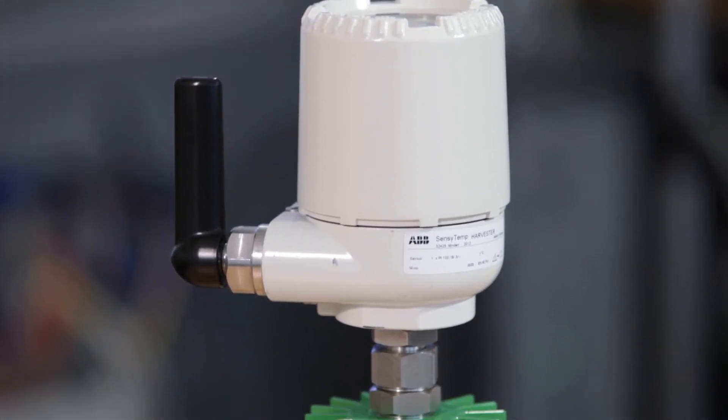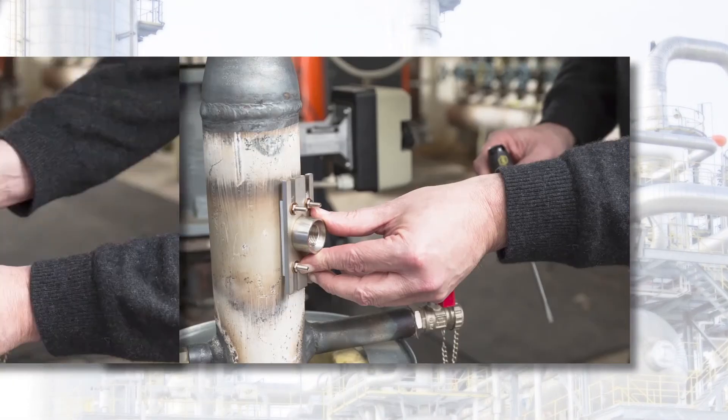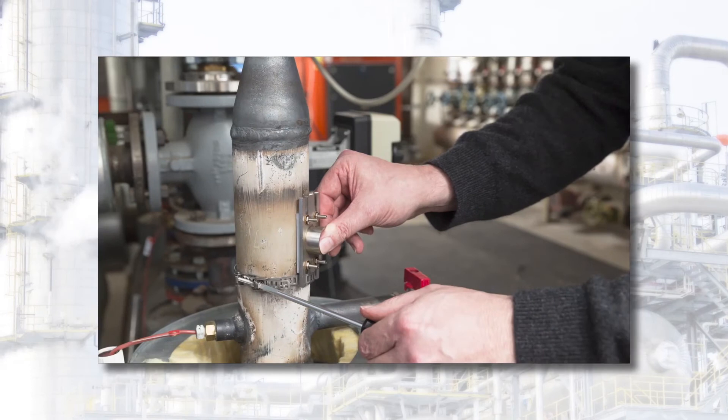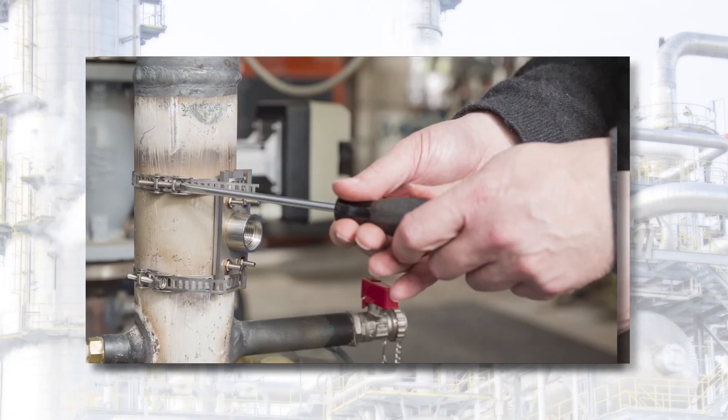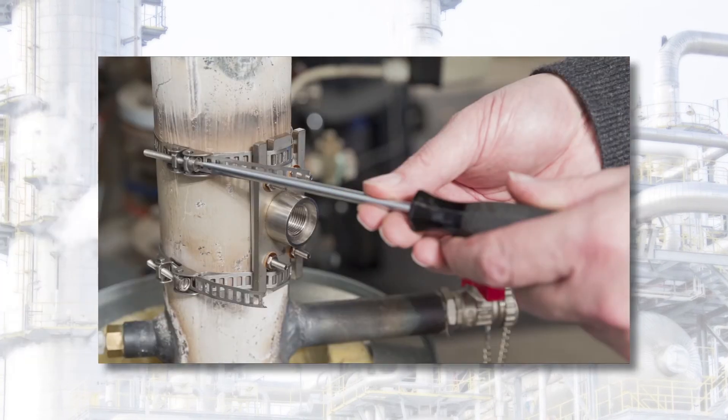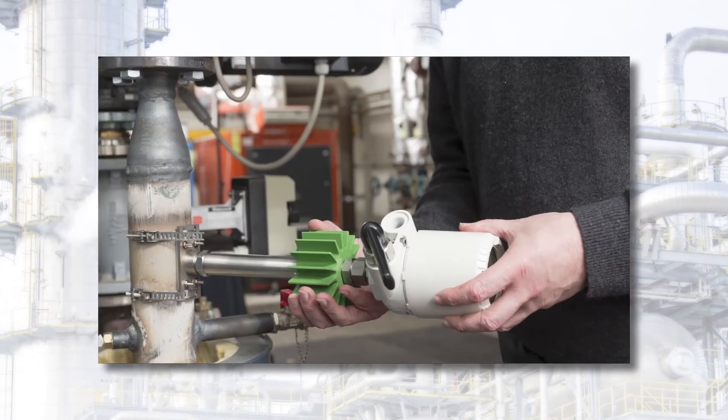The Energy Harvester installation at the pipe surface only takes a couple of minutes and can be done by just one person. Now it is really easy to install temperature measuring points even years after the original process setup and commissioning in order to optimize your process.